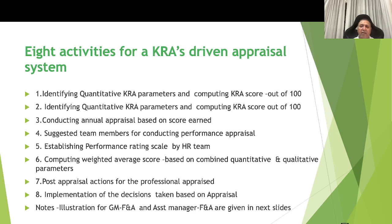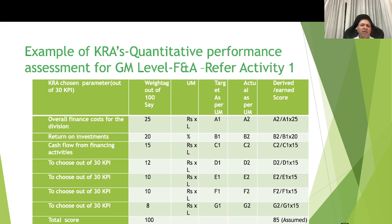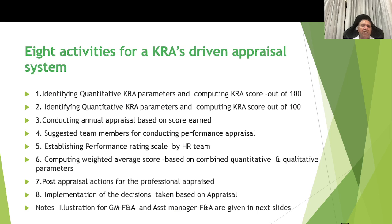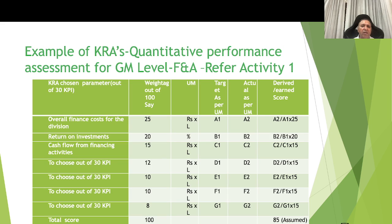This is an example of KRA quantitative performance assessment at the GM level, corresponding to Activity 1. There are five columns: KRA chosen from 30 KPI parameters (15 direct and 15 indirect responsibility areas), weightage out of 100, unit of measurement, target, actual, and derived score. For example, the first KRA for a general manager could be overall finance cost for the division, with a weightage of 25 out of 100, measured in rupees or USD lakhs.